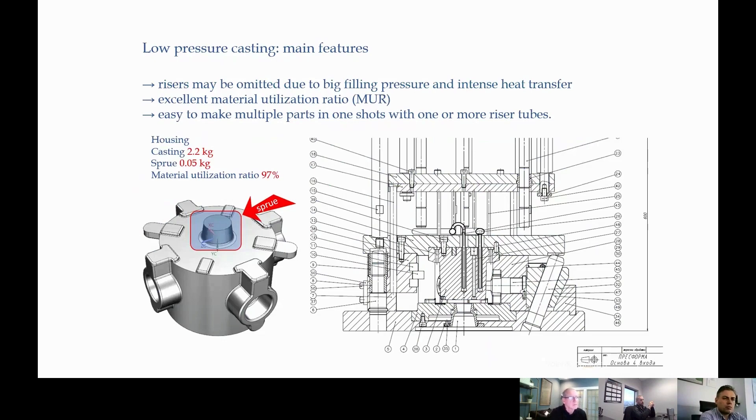Also, we can make very easily more than one part in one shot by multiple riser tubes, or even with one riser tube. We can spread the flow to many parts and fill them simultaneously. So we have many advantages regarding gravity, and that's why if we talk about suspension parts, many companies and foundries choose low pressure. On the slide, you can see another advantage.